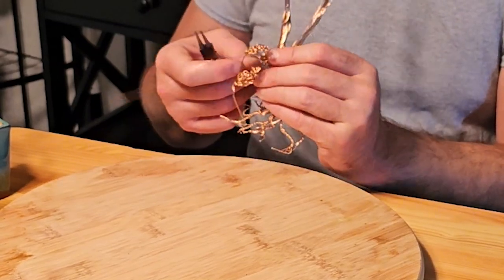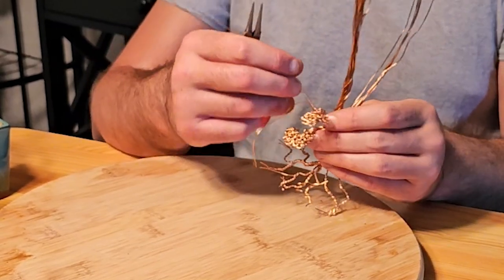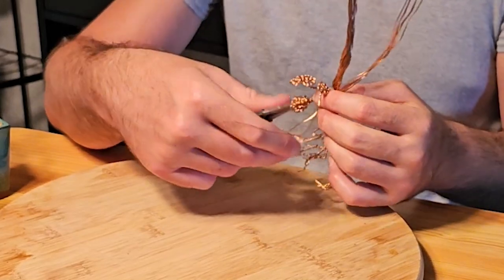We just continue to shape our leaves and then we start on the next strand of wire.